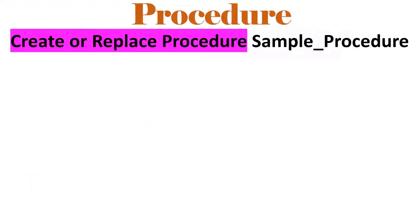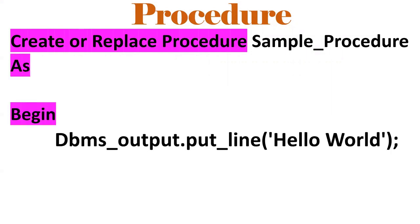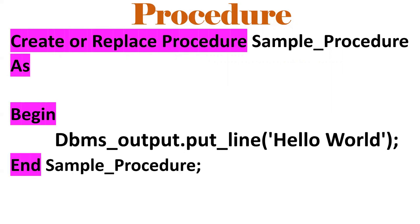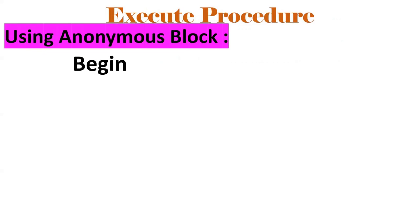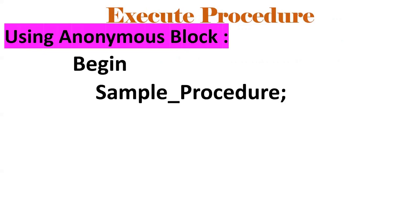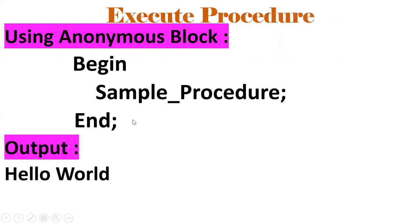What is a procedure? A procedure is created using CREATE OR REPLACE PROCEDURE, then the procedure name, AS, BEGIN, DBMS_OUTPUT.PUT_LINE('Hello World'), END. DBMS_OUTPUT is used to see the result on the console. To execute a procedure using an anonymous block: BEGIN procedure_name; END. That will give the output 'Hello World'.